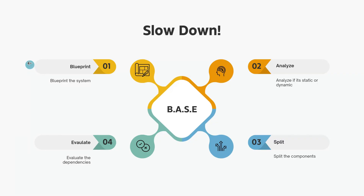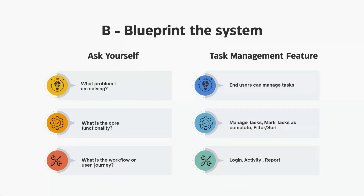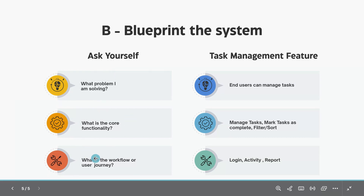Let's start with B — Blueprint the system. When I say blueprint, I'm not talking about writing detailed algorithms or drawing complex UML diagrams — this is not 1995, we are in the AI era. What I mean is think through what you are building at a very high level. Ask yourself: what is the problem I'm solving, what is the core functionality, and what is the workflow or user journey?